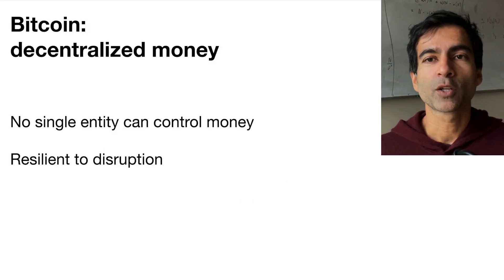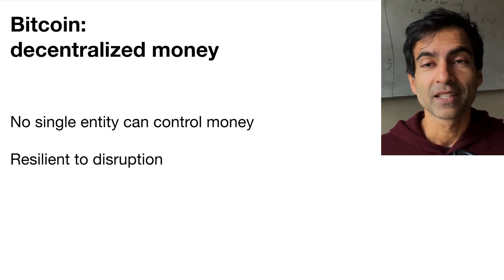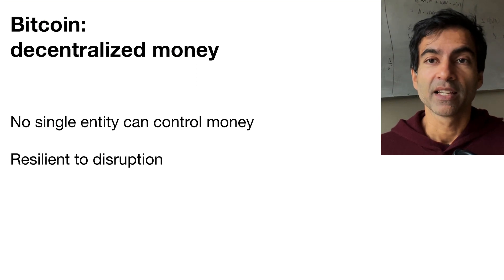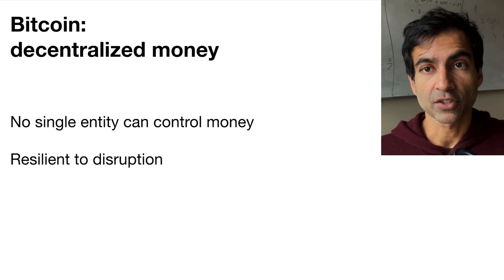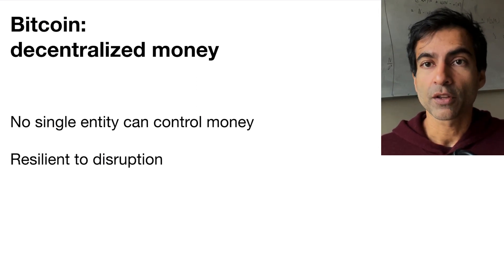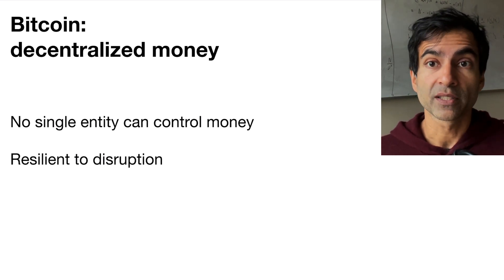At its heart, Bitcoin is a form of money. Well, it's an algorithm. It's an algorithm that simulates money, and it does it in such a way that the money is decentralized, meaning that there is no central authority or central entity that we need to trust in order to use the money.